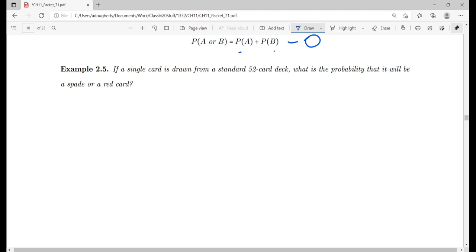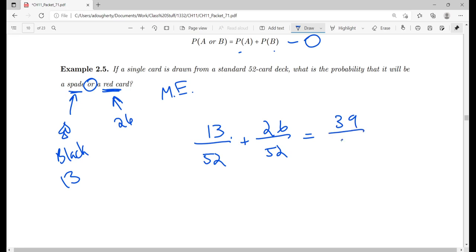If I draw a single card from a standard deck, the probability that it will be spade or red. Remember, spades are this suit. They are black by default. There's 13 spades, and these are mutually exclusive events. So I don't need to worry about any level of overlap here. Half of the deck is red. There's 26 red cards, all the hearts and the diamonds. So in total, I'm looking at 13 out of 52 plus 26 out of 52, for a total of 39 out of 52, which is 3 fourths.